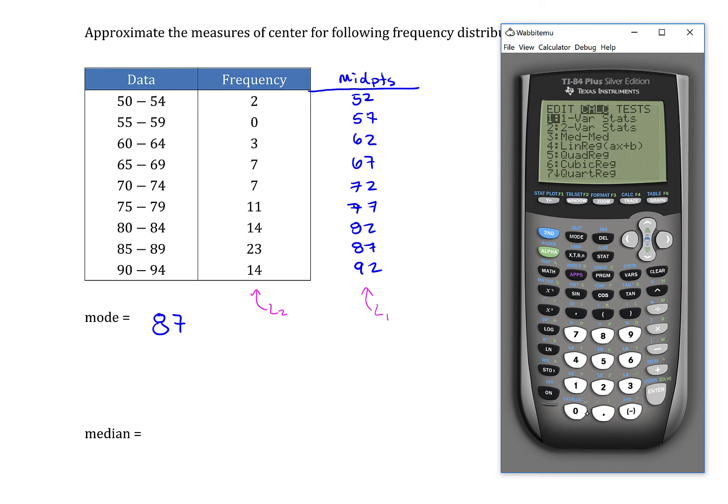So hit STAT, slide over to CALC. The very first item is 1VAR stats. If you have this menuing system, that's great. Just put L1 as the first item, L2 as the second, since we have midpoints in L1, frequencies in L2.